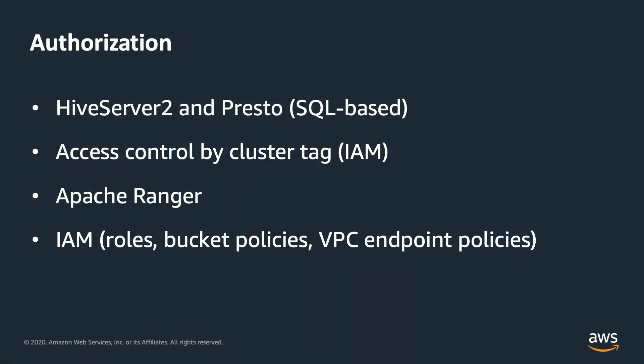When launching an EMR cluster, there are two important roles. One is the EMR service role, which controls what the EMR service can access or do within your account — for example, spinning up EC2 instances. The other is the EMR EC2 role, which limits what resources your EMR cluster can reach, including different S3 buckets, Kinesis streams, DynamoDB tables, and so on. You can also limit access to different buckets by using bucket policies as well as VPC endpoint policies.